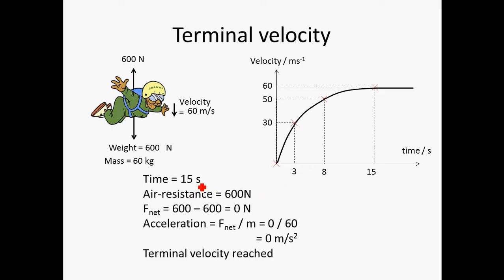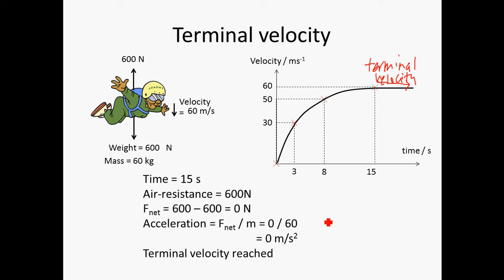As it goes further to 15 seconds, the velocity may have reached 60 m/s, and the air resistance may have increased to 600 newtons — equal to the weight. At this point the resultant force is zero, so the acceleration is also zero. Plotting this point, 15 seconds represents where the skydiver enters terminal velocity. From this region onwards, the object has reached terminal velocity, travelling at a constant velocity.